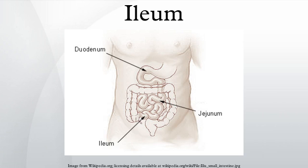The ileum is the final section of the small intestine in most higher vertebrates, including mammals, reptiles, and birds. In fish, the divisions of the small intestine are not as clear, and the terms posterior intestine or distal intestine may be used instead of ileum.